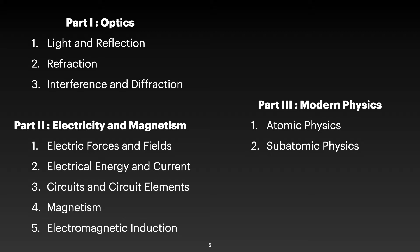In part two we'll discuss electricity and magnetism. We'll talk about electric forces and fields, then move to general electricity which is electrical energy and current, then circuits and the different circuit elements, and then magnetism and electromagnetic induction. In part three we'll talk about modern physics — atomic physics and subatomic physics, which is basically nuclear physics.